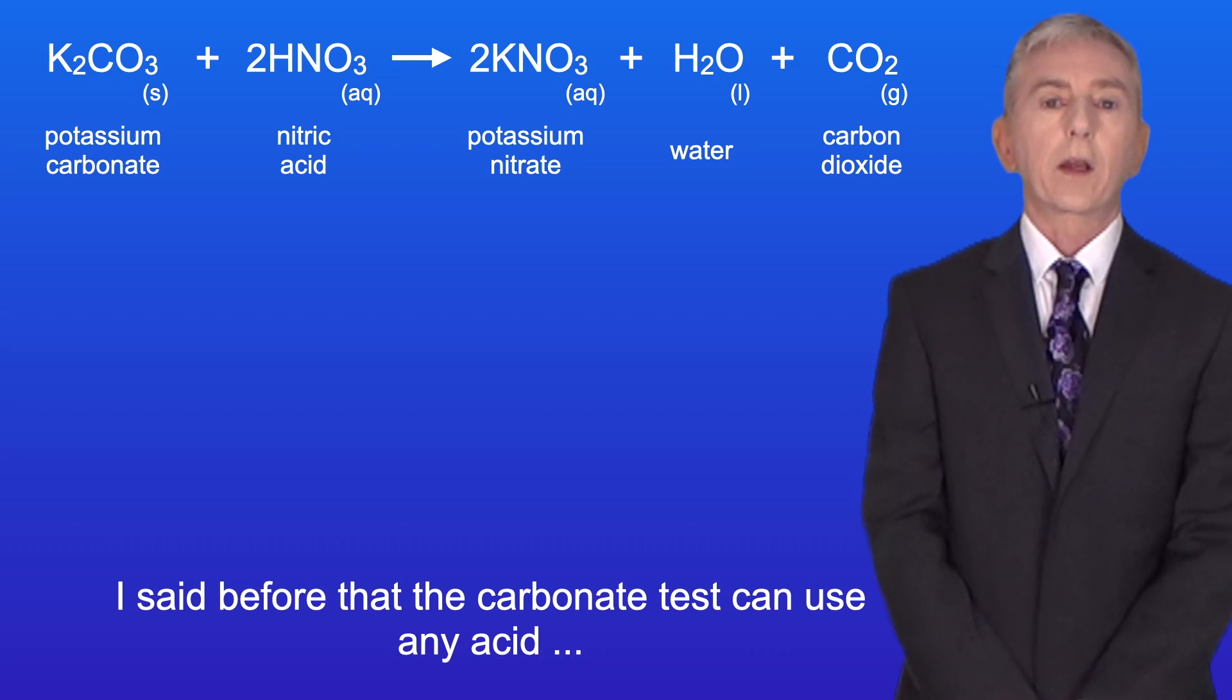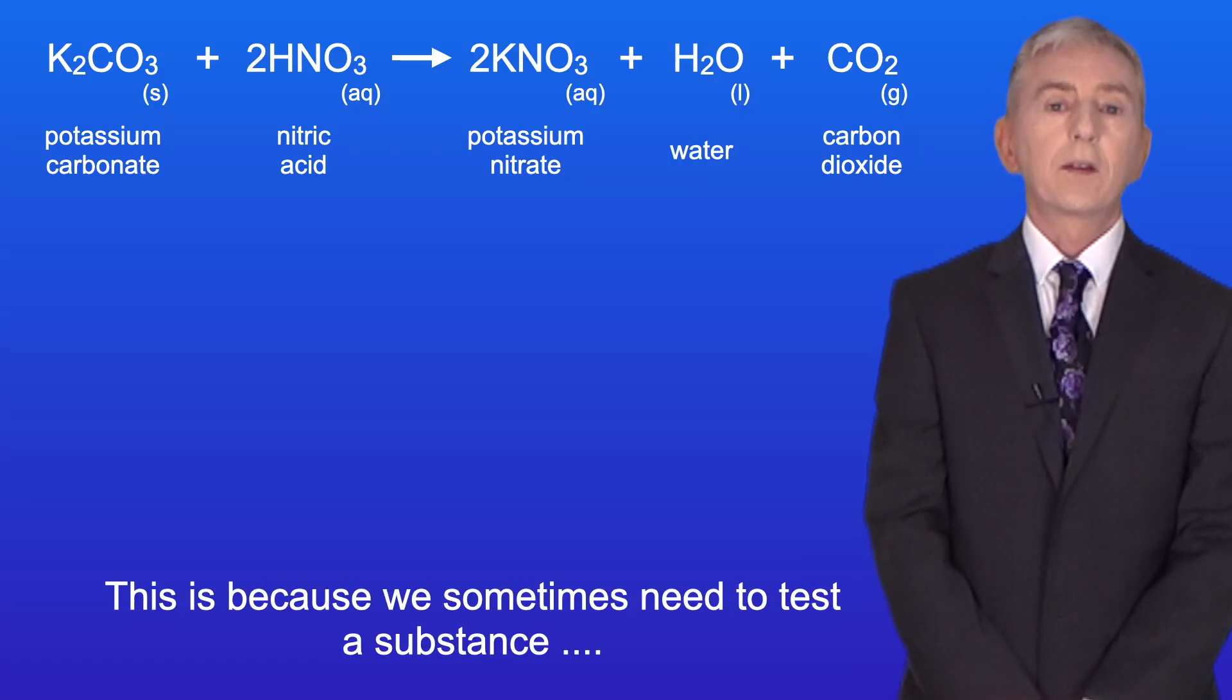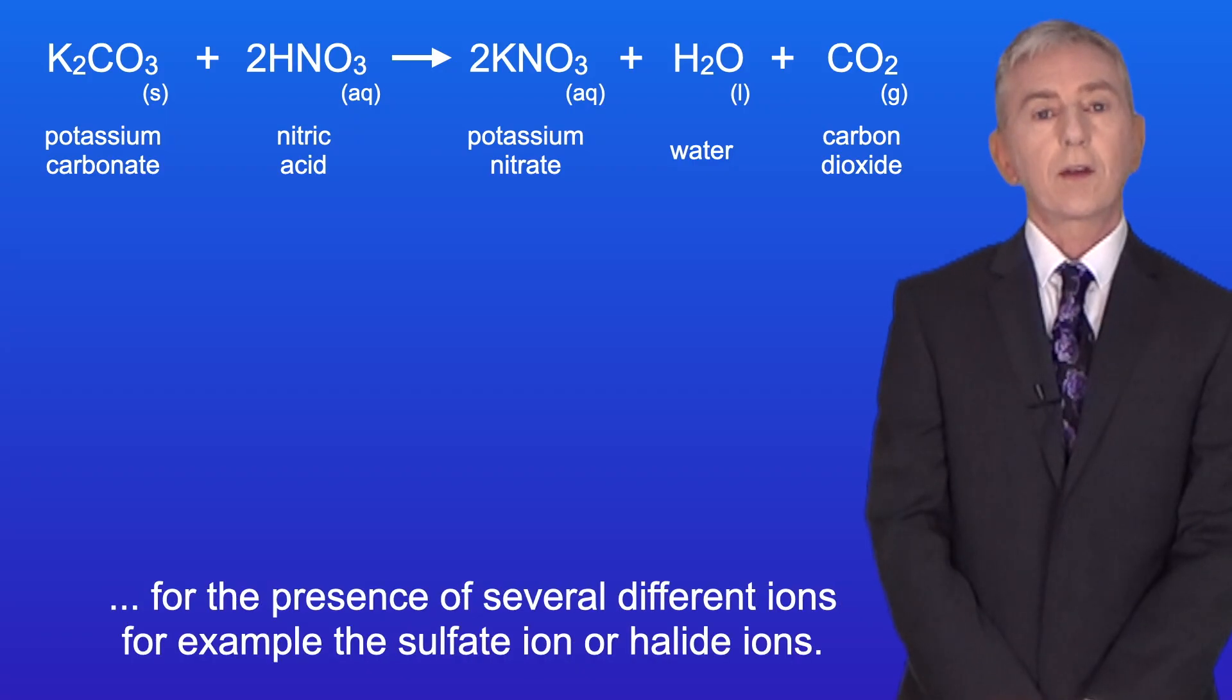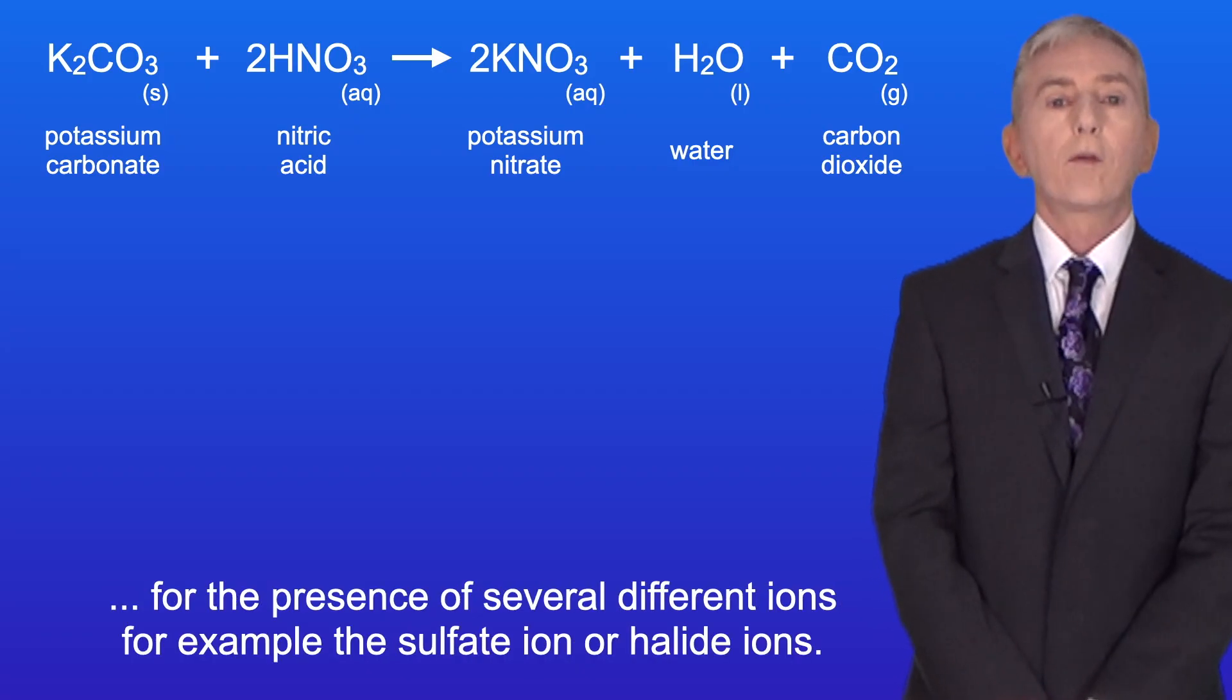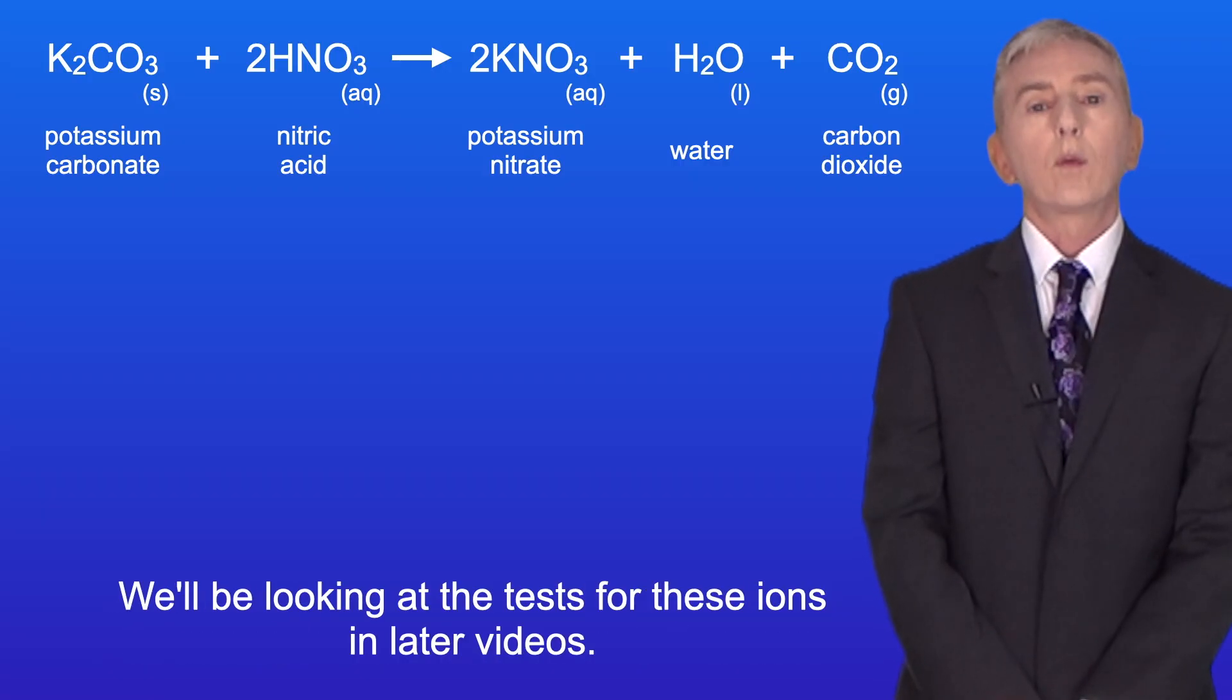Okay, now I said before that the carbonate test can use any acid, but in this case I use dilute nitric acid. This is because we sometimes need to test a substance for the presence of several different ions, for example the sulfate ion or halide ions. And we'll be looking at the tests for these ions in later videos.